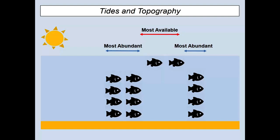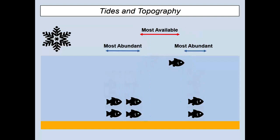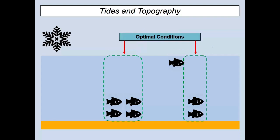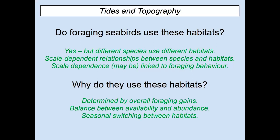To summarize: in summer you've got areas where prey is most abundant and areas where prey is most available — they don't necessarily coincide — and birds will forage at the border where it's most profitable. In winter, when there's less prey, birds can't rely on availability alone and have to go where prey is most abundant, shifting their habitat accordingly. In summary, why do birds use these habitats? It could be a balance between availability — how easy it is to catch prey — and abundance, with potential seasonal switching between habitats based on changes in prey biomass.